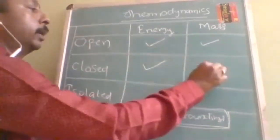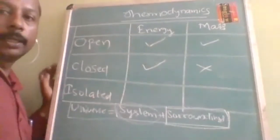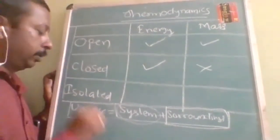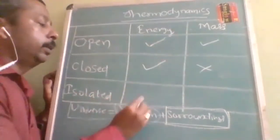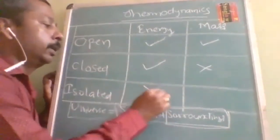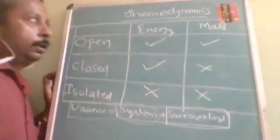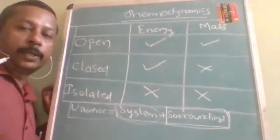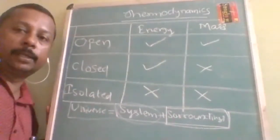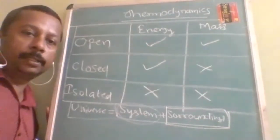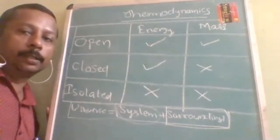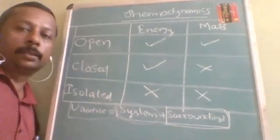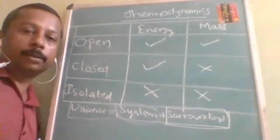In a closed system, it can exchange only energy but not mass — mass cannot be exchanged. In an isolated system, neither energy nor mass can be exchanged. It is completely separate and will not exchange anything with the surroundings. That type of system is called an isolated system, like a thermos flask.